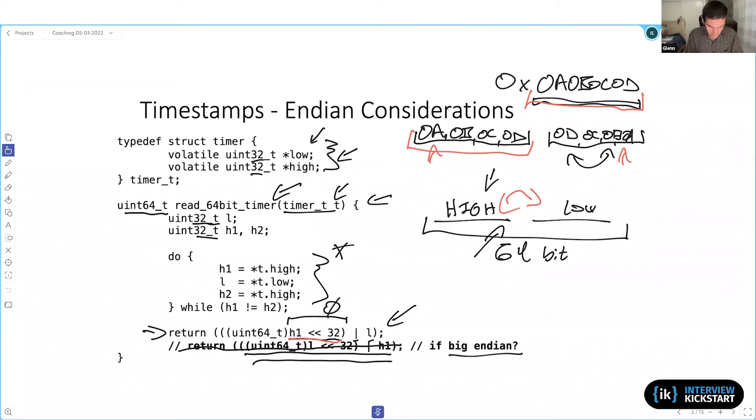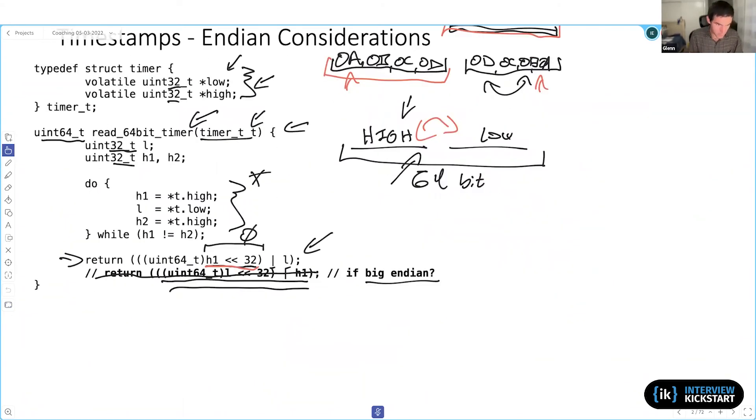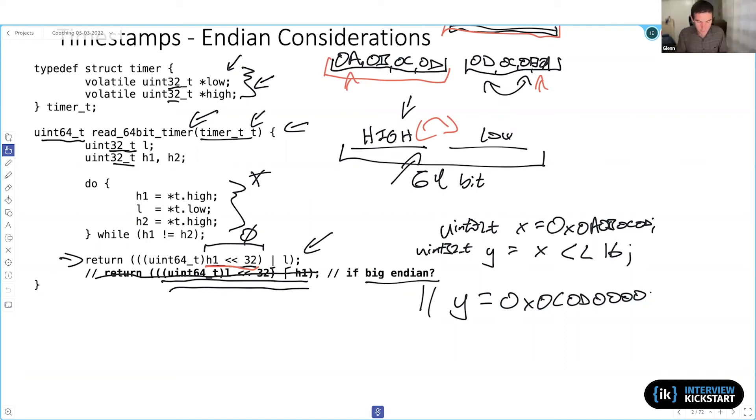So maybe just as a slightly simpler example, if we have something like x, and let's see my same example as before, 0x0a0b0c0d, and then we have a uint32_t y, and we say y equals x shifted over by 16, then y is always going to equal 0x0c0d0000. So that's always going to be the case, regardless of whether or not this code was run on a little or big endian machine.